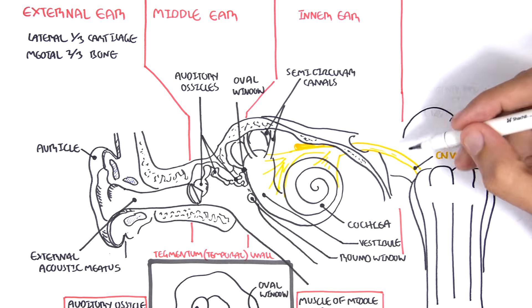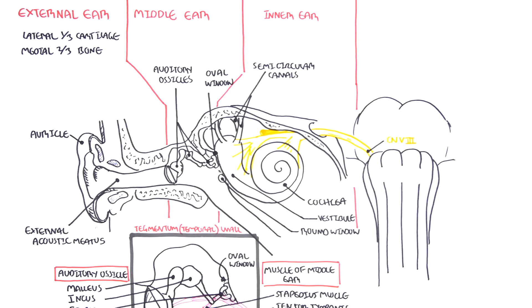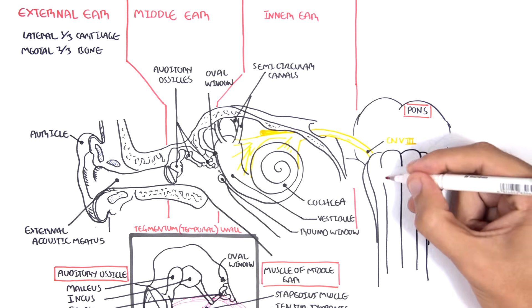The pons is part of the brain stem. Here is the brain stem and you have the pons and the medulla oblongata.